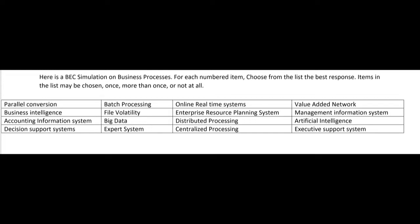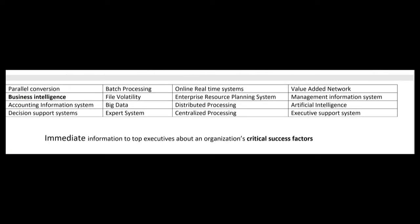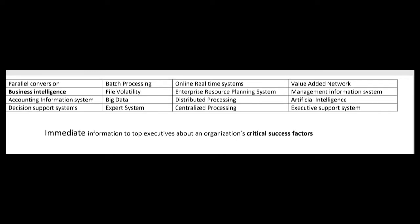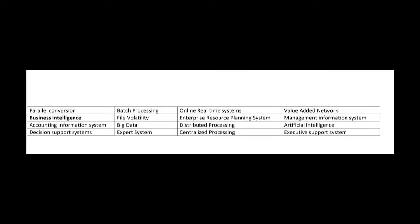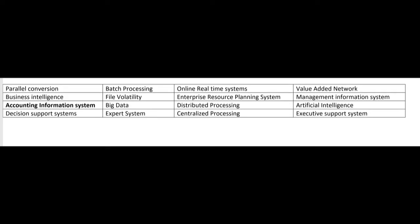Parallel conversion is a lot more expensive than if you just pulled the plug on the old system and did a direct changeover. Business intelligence, or BI, gives immediate information to top executives about the organization's critical success factors. When you see business intelligence, think of top executives needing immediate information regarding critical success factors. Also know that business intelligence is replacing the older system known as the EIS — the executive information system, or executive support system.